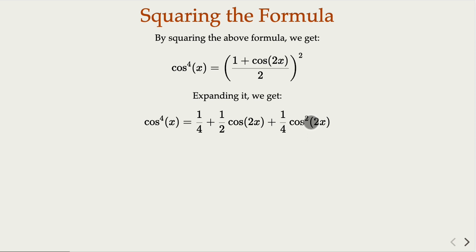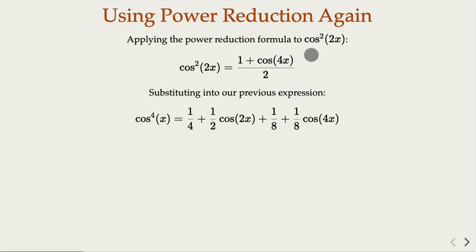So what you can do is to apply the formula again, this time for cosine squared 2x. So what you're going to get is cosine 4x. Applying the formula for power reduction on cosine squared 2x. So combine the term, you're going to have this.